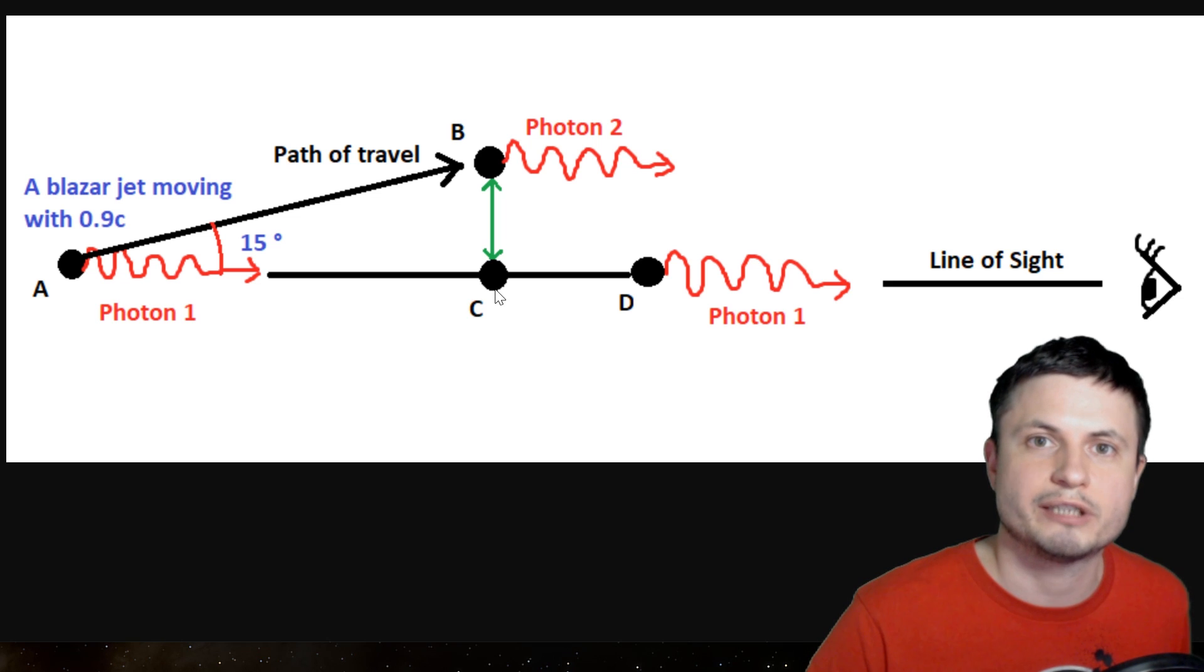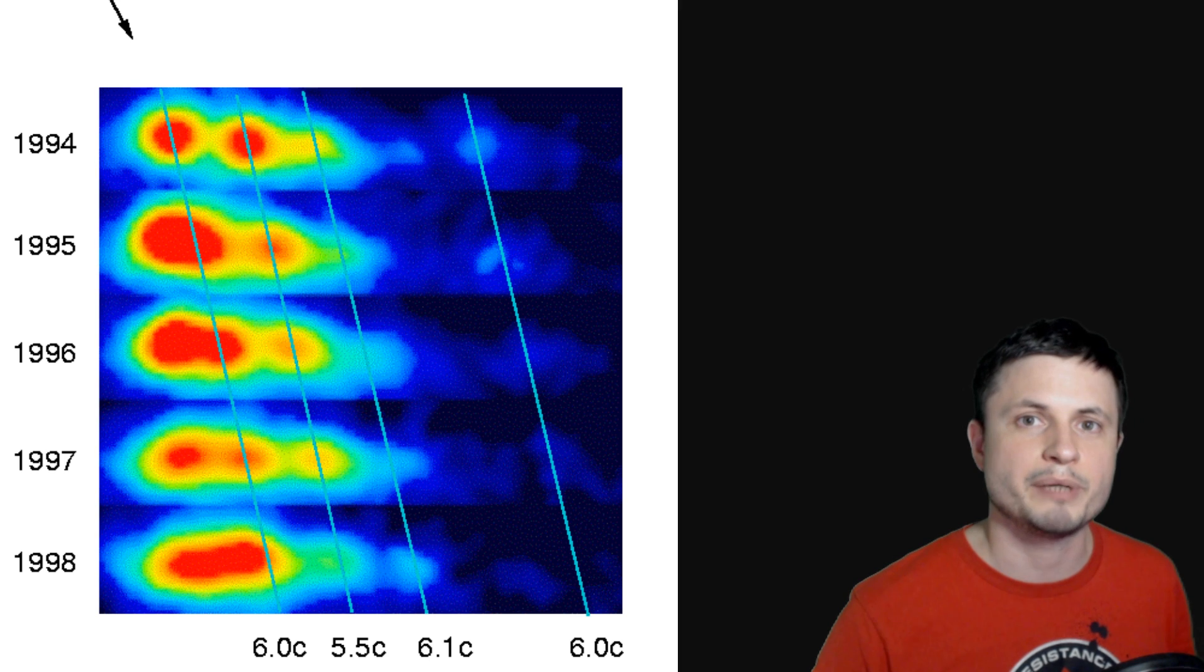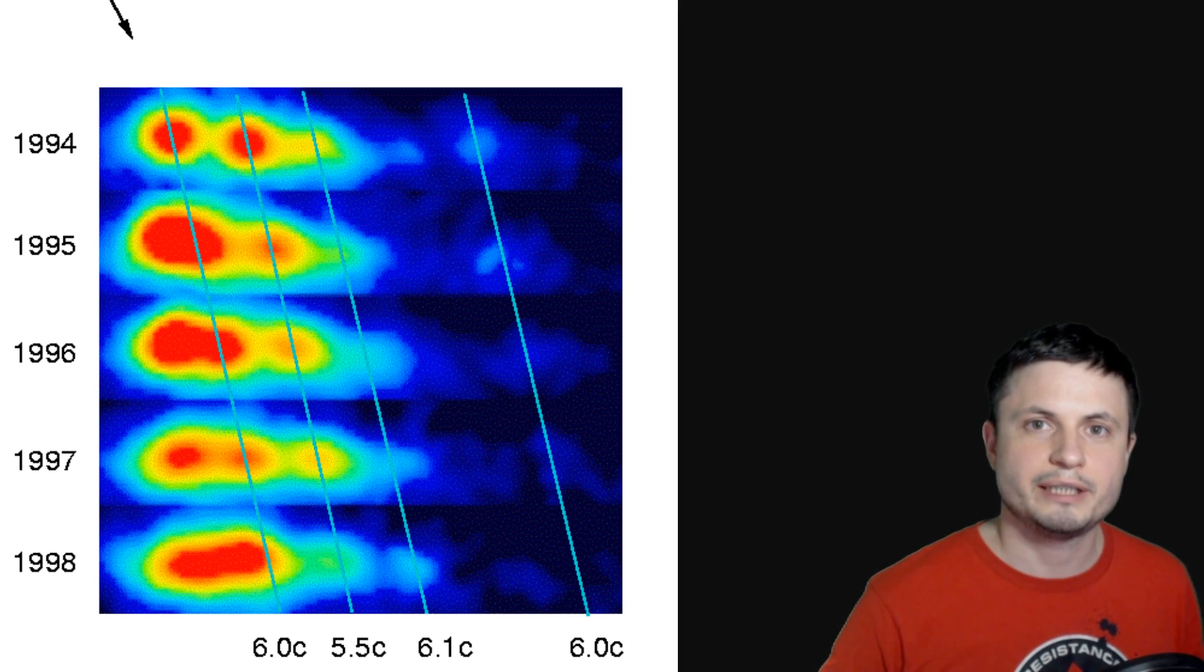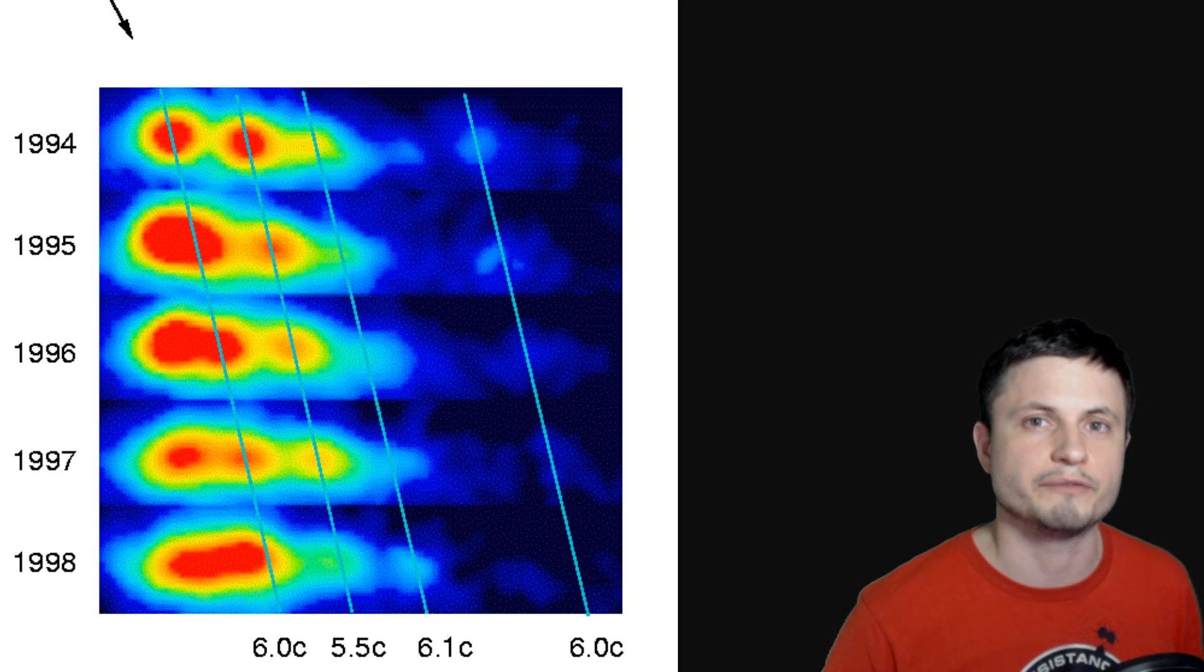So this is kind of what we're seeing with the M87 black hole. It seems to appear to move about seven times the speed of light, suggesting that the actual particles are moving really close to about 99% of the speed of light.